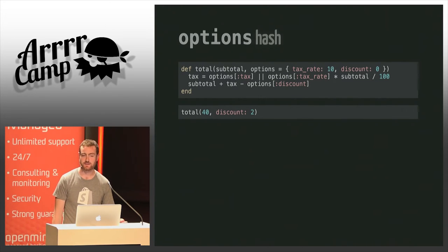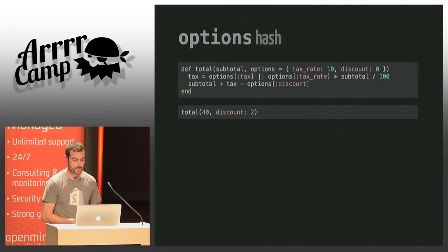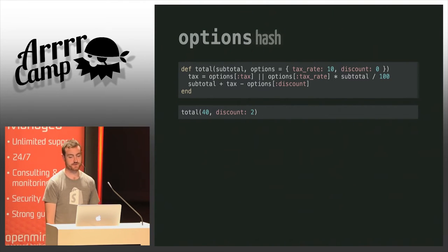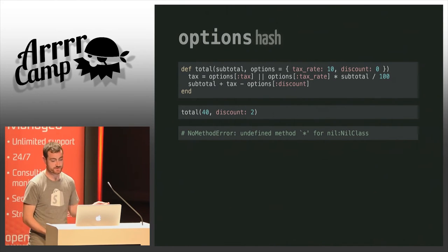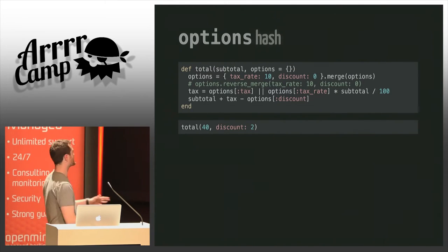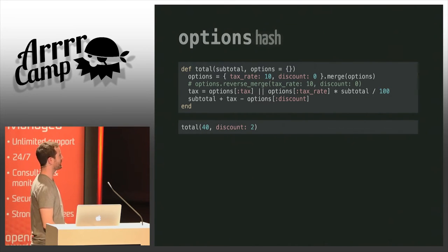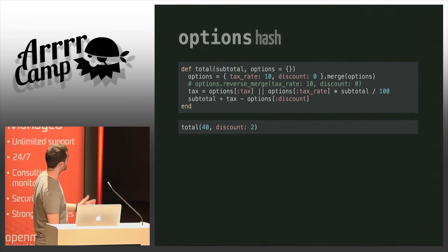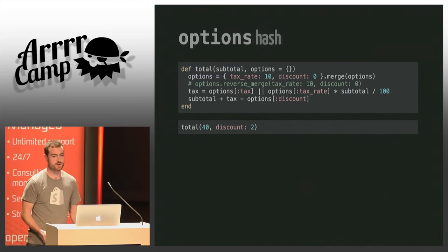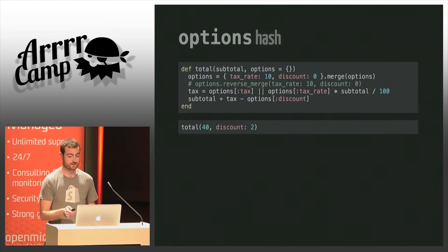Coming back to the example — now we want to add a percentage taxes feature. We can add default values, but obviously this won't work because the full hash is just a single parameter, so it will override the other one and we won't get the default value for the tax rate. Over the years a number of techniques emerged — usually just a line of code — to get around this, but it's still boilerplate. Libraries like ActiveSupport gave us `reverse_merge` to make it a little nicer.